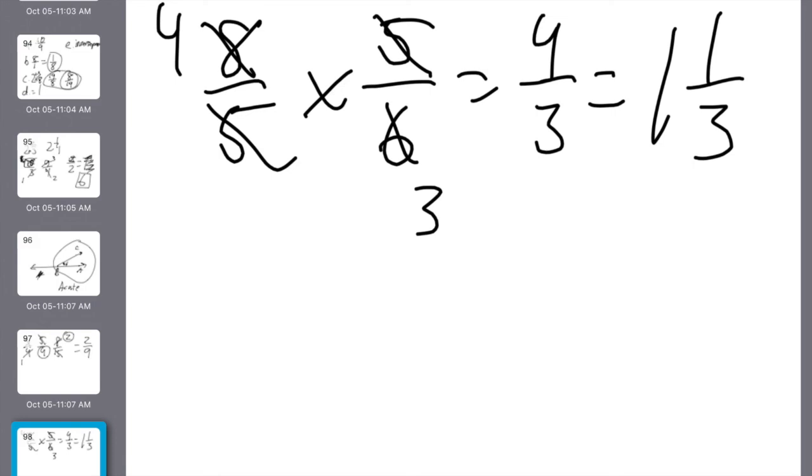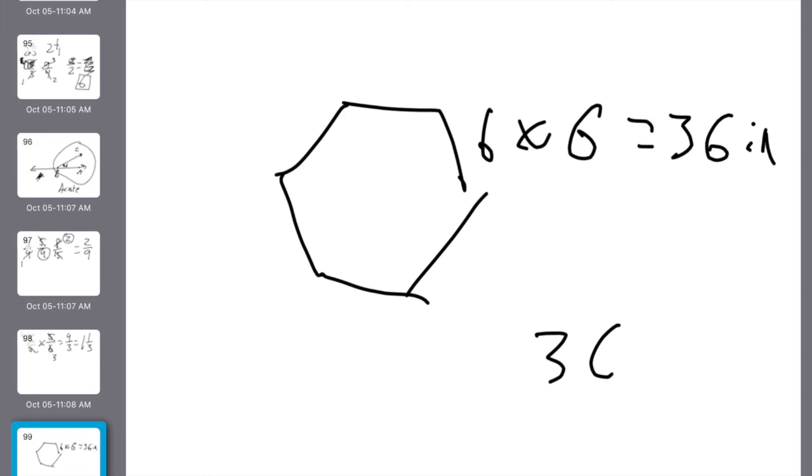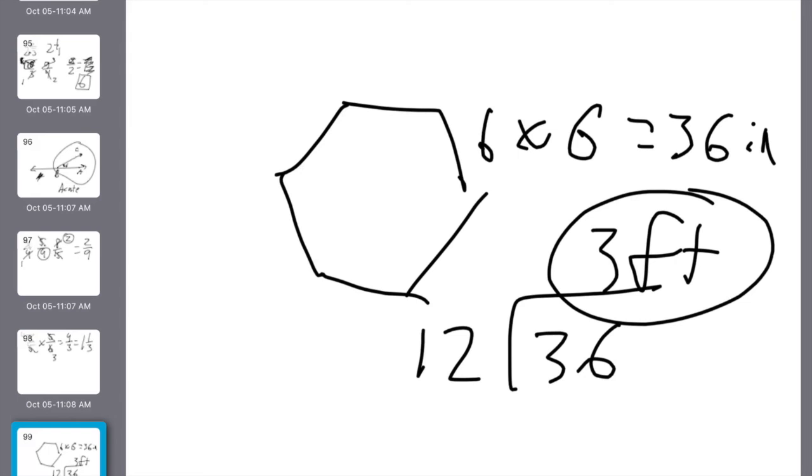28. A regular hexagon is inscribed in a circle. If one side of the hexagon is six inches long, then the perimeter of the hexagon is how many feet? I said that wrong. I meant six inches. So you have a hexagon at six sides. Each one is six. Six times six is 36. It's 36 inches. They asked me for feet. How many inches in a foot? 12. So I take my 36. I divide it by 12. That gives me three feet.